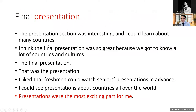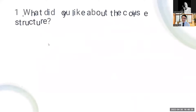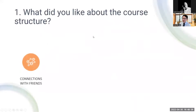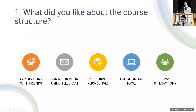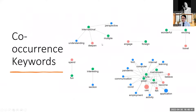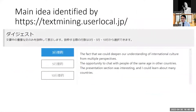These are what they said. What did they like about the course structure? The five aspects: making friends and Telegram, cultural perspective, use of online tools, and class interaction. The co-occurrence keyword analysis gives the main ideas from their written responses: the fact that they could deepen their understanding of intercultural and international culture from multiple perspectives; opportunity to chat with people of the same age in other countries; the presentation section was interesting; and they could learn a lot about different countries.